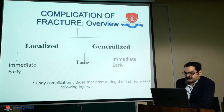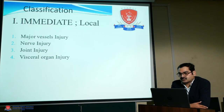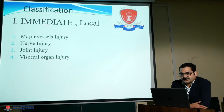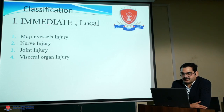Today we'll focus on local complications. Immediate local complications could be major vessel injury, like popliteal or brachial artery injury. Nerve injury could occur at structures very close to the fracture site — the most common is radial nerve injury in fracture of the shaft of the humerus. Joint injury may also occur close to the fracture, and visceral organs could be damaged, for example in pelvic injuries.